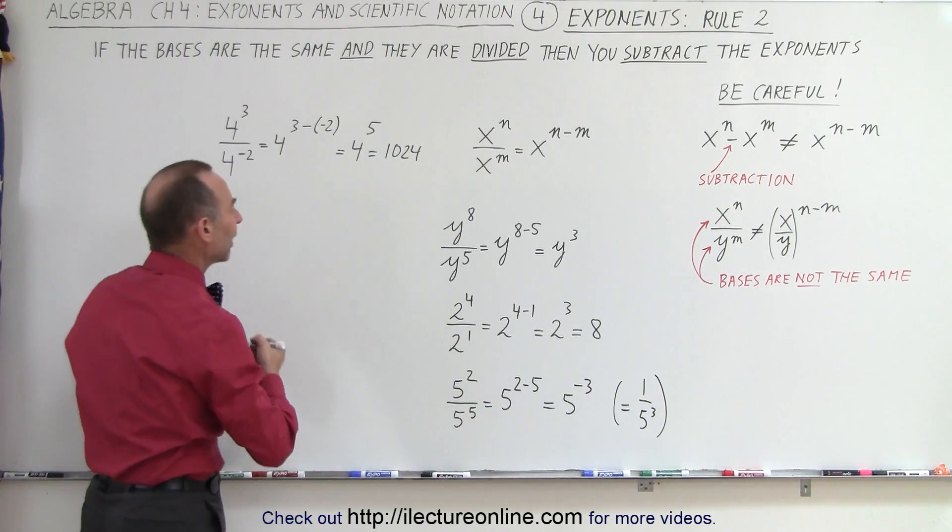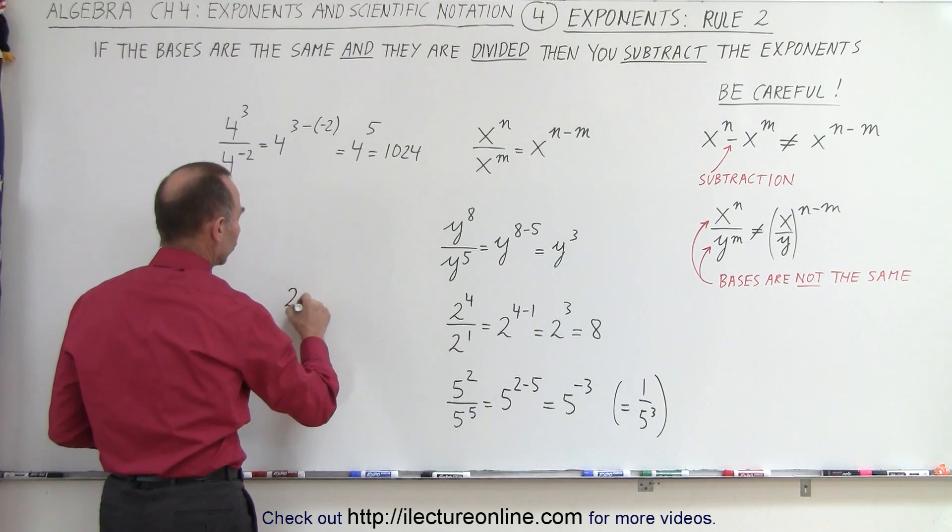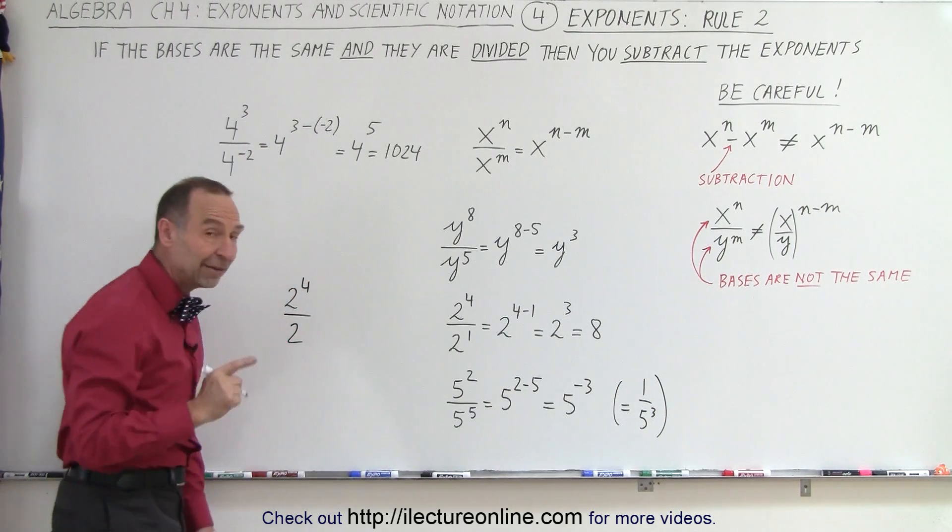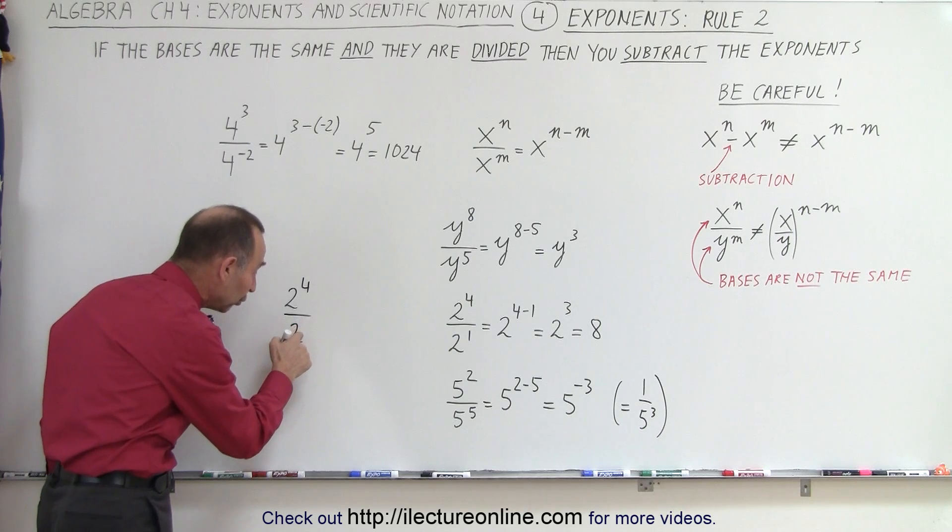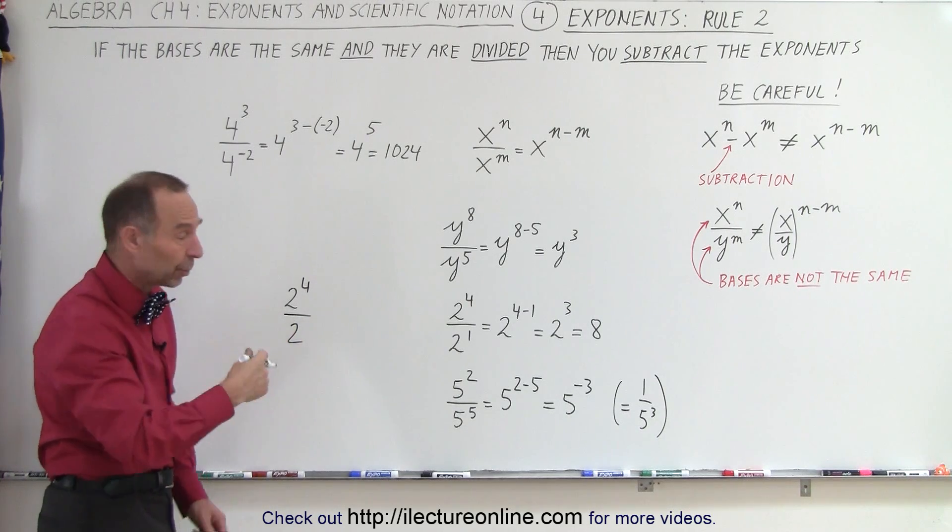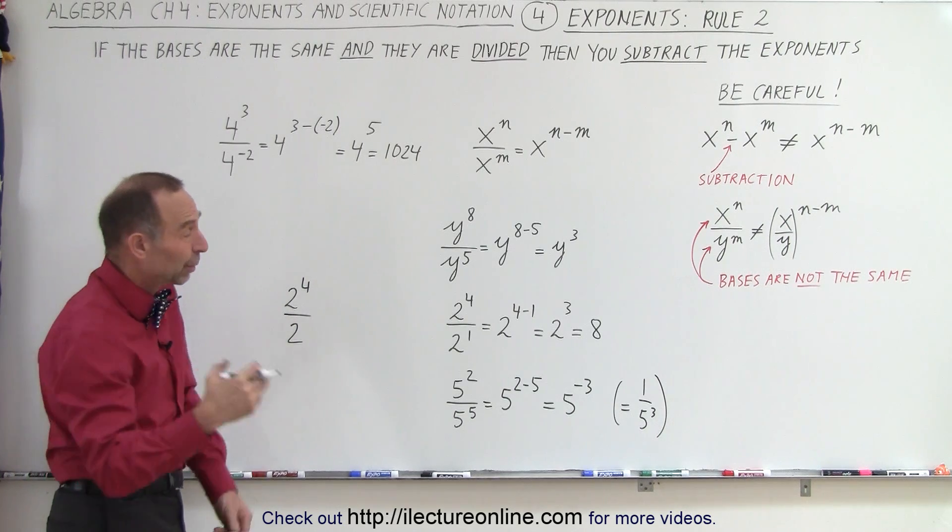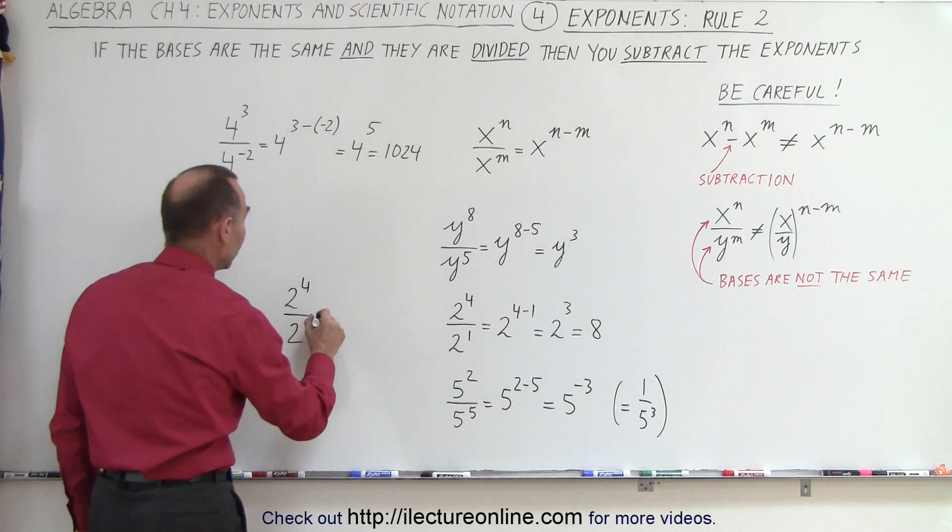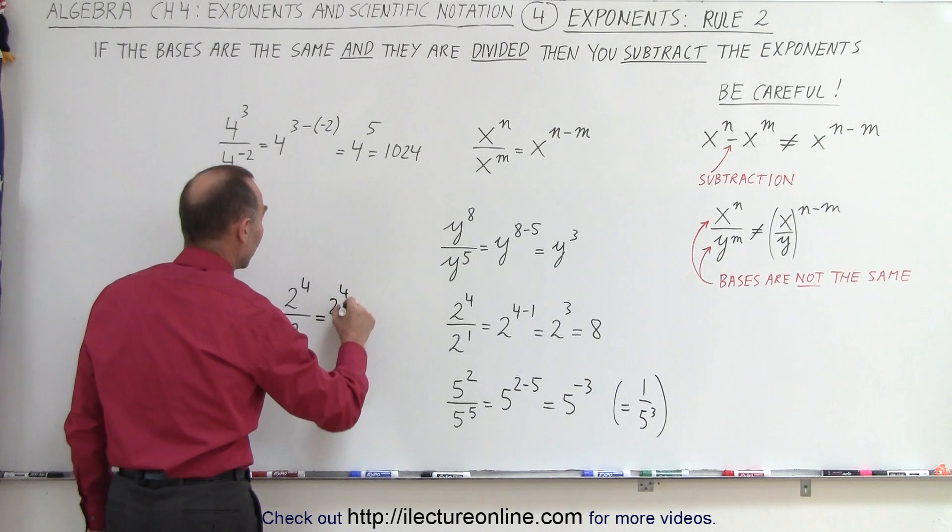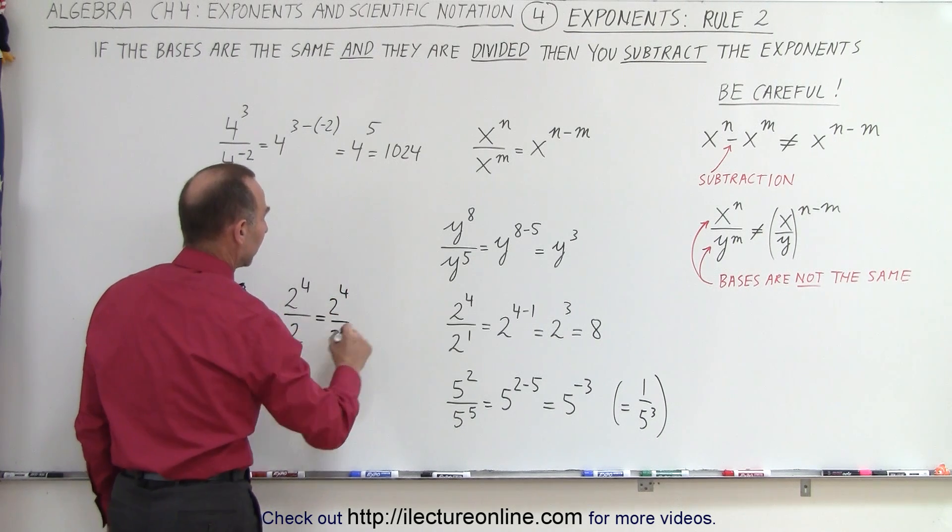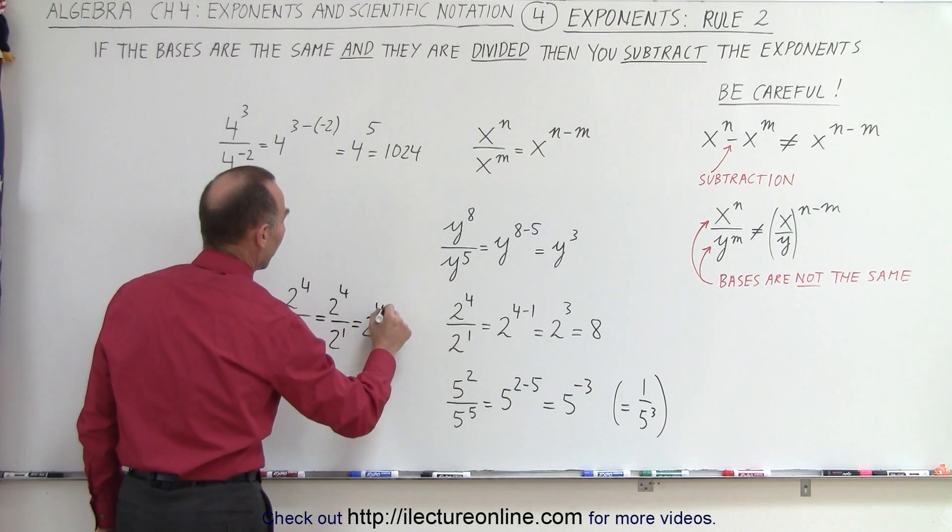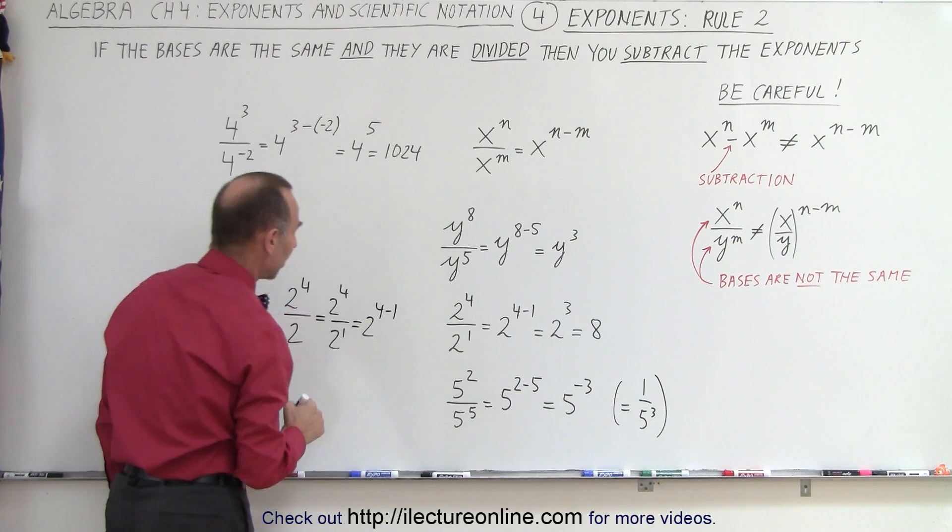And this reminds me of something. What if we had something that looks like this: 2 to the fourth power divided by 2? Now even though we did not write the exponent to the first power, when you just write a number without an exponent, that implies the exponent is there. The exponent simply is equal to 1. So this is indeed equal to 2 to the fourth divided by 2 to the first power. And so this is 2 to the 4 minus 1, just like what we saw over there.